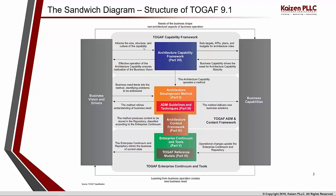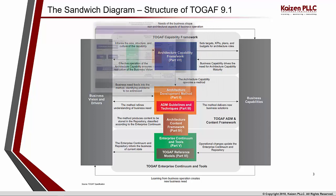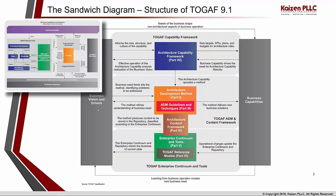The first TOGAF part in the framework is the Architecture Capability Framework. As an organization sets its vision, goals, and drivers, this informs the size, structure, and culture of the capability. To achieve a desired capability, the organization needs to determine what type of organization, process changes, and people roles and responsibilities are required. The architecture capability framework helps set up architecture governance, evaluate the architecture maturity model, and provides a skills framework to define roles and responsibilities from an enterprise architecture perspective.